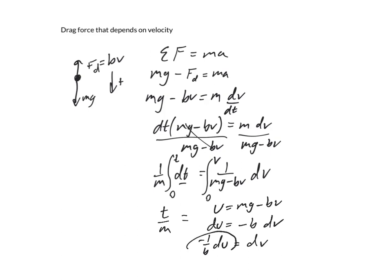Divide both sides by negative b, so we get negative 1 over b du is equal to dv. And at this point, we're going to plug that in for dv up above. We're going to plug that in for u. Replace that with u. And away we go.